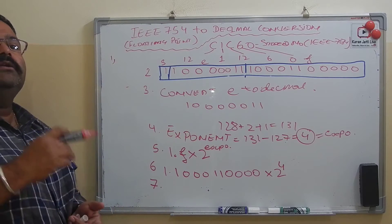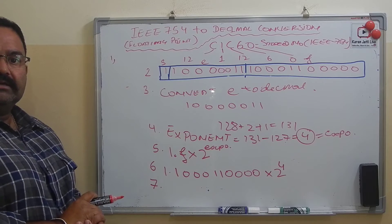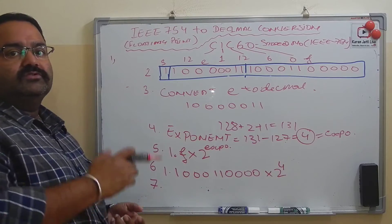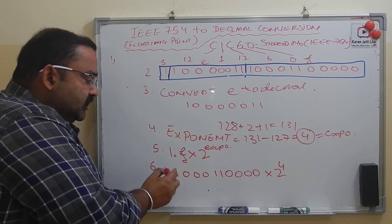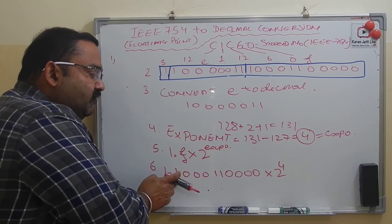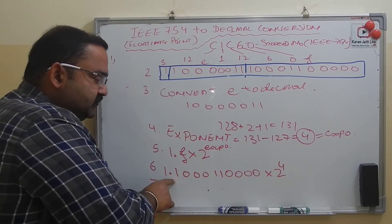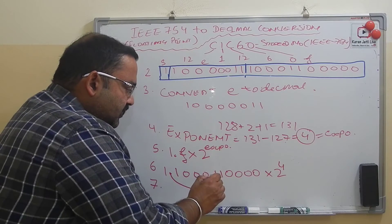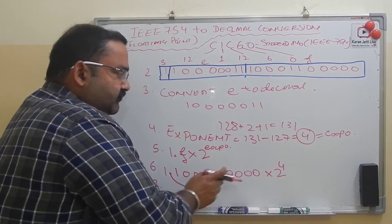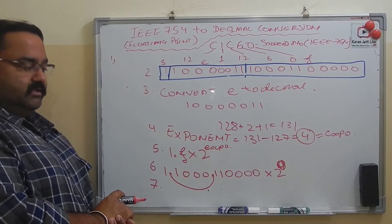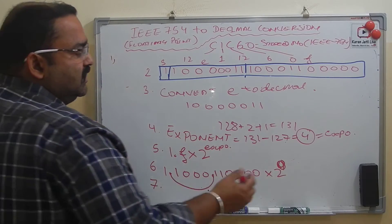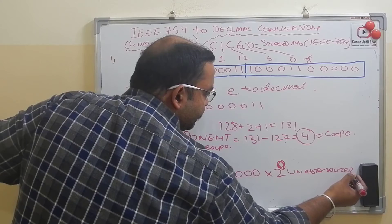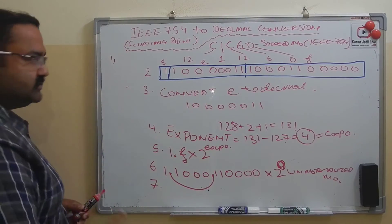Step seven: unnormalize the number. To unnormalize, we convert the exponent from 4 to 0 by moving the decimal point four places to the right. So the decimal moves four positions, making it 0 × 2^0 — this is our unnormalized number.